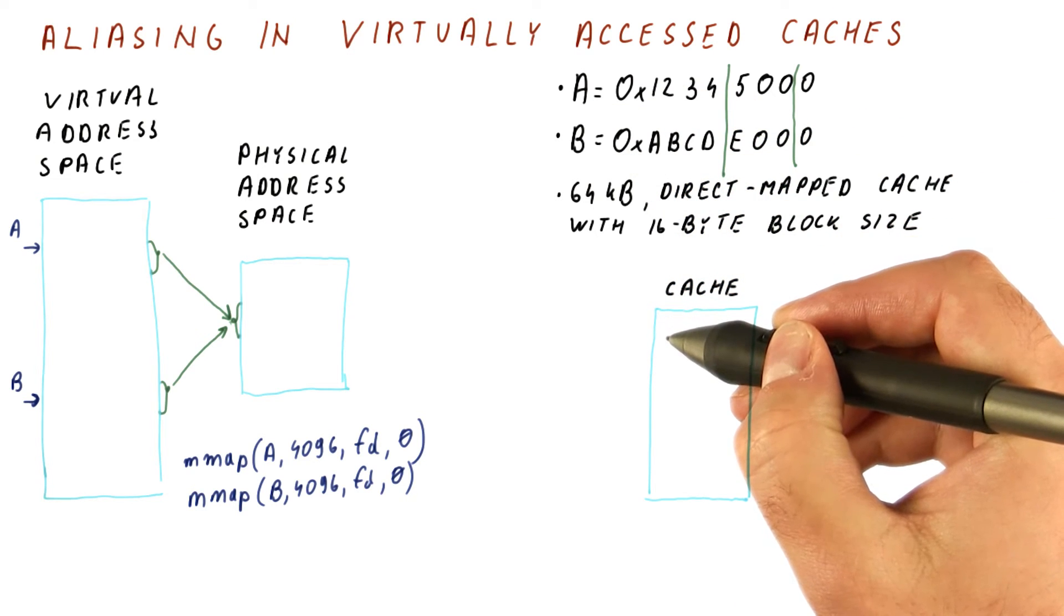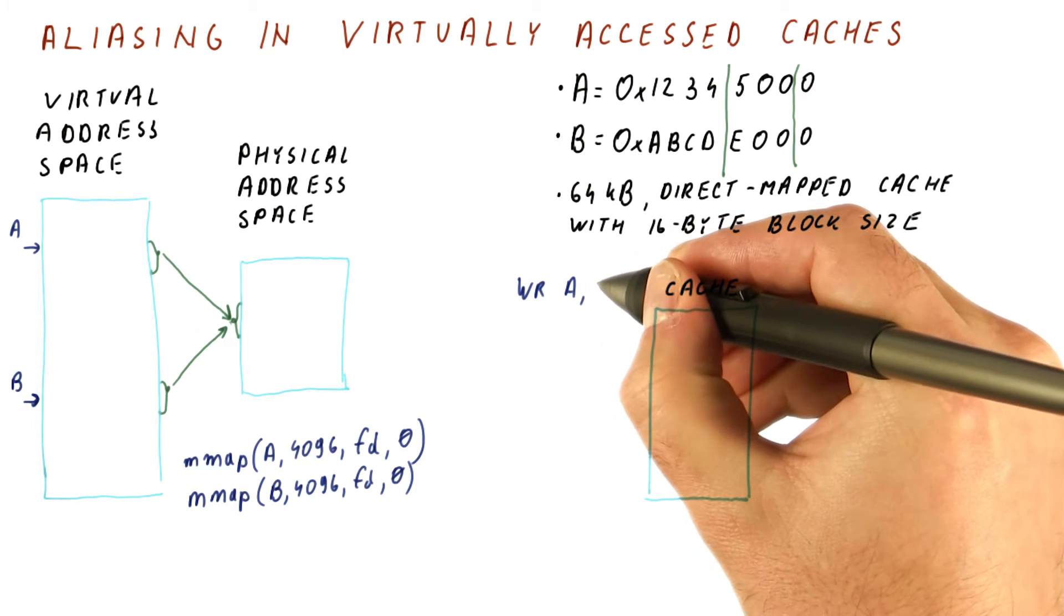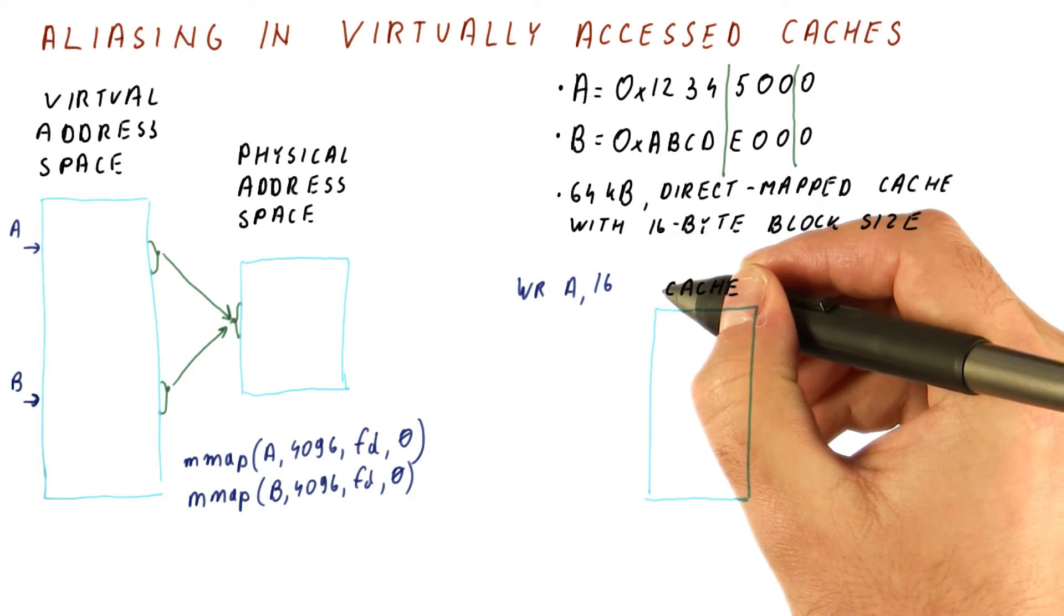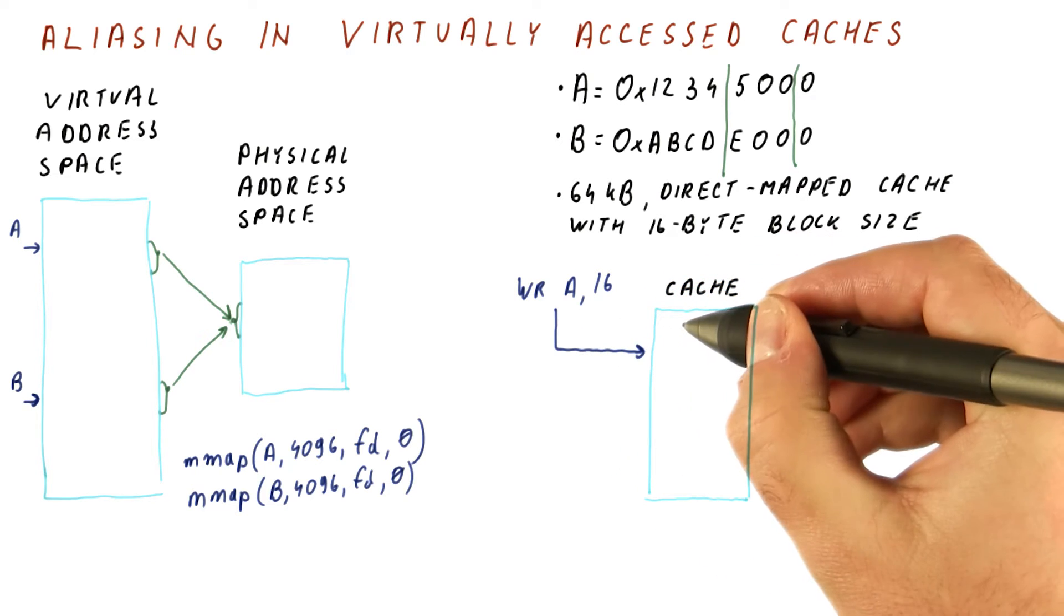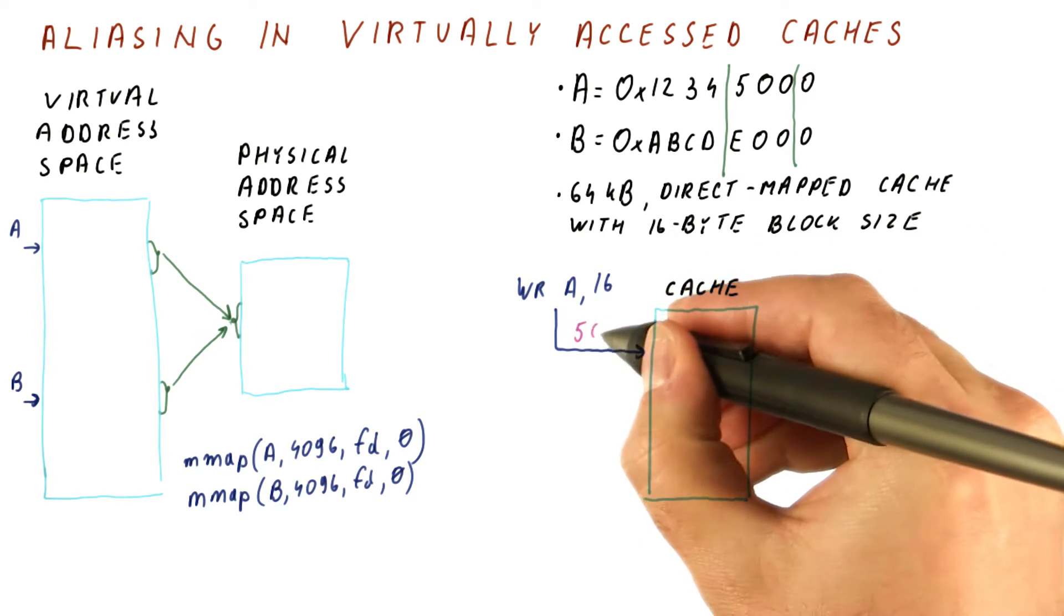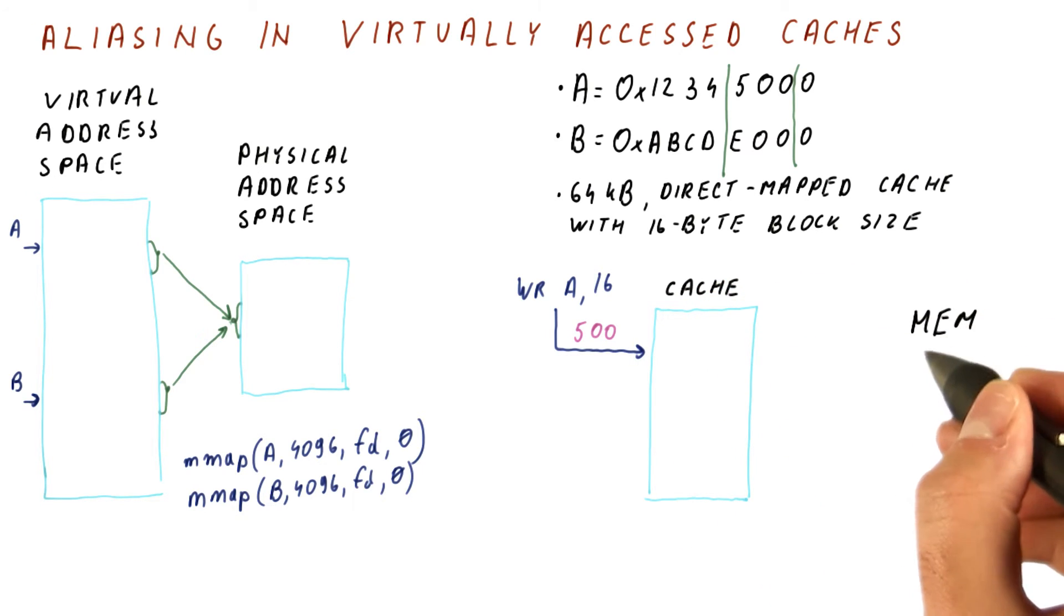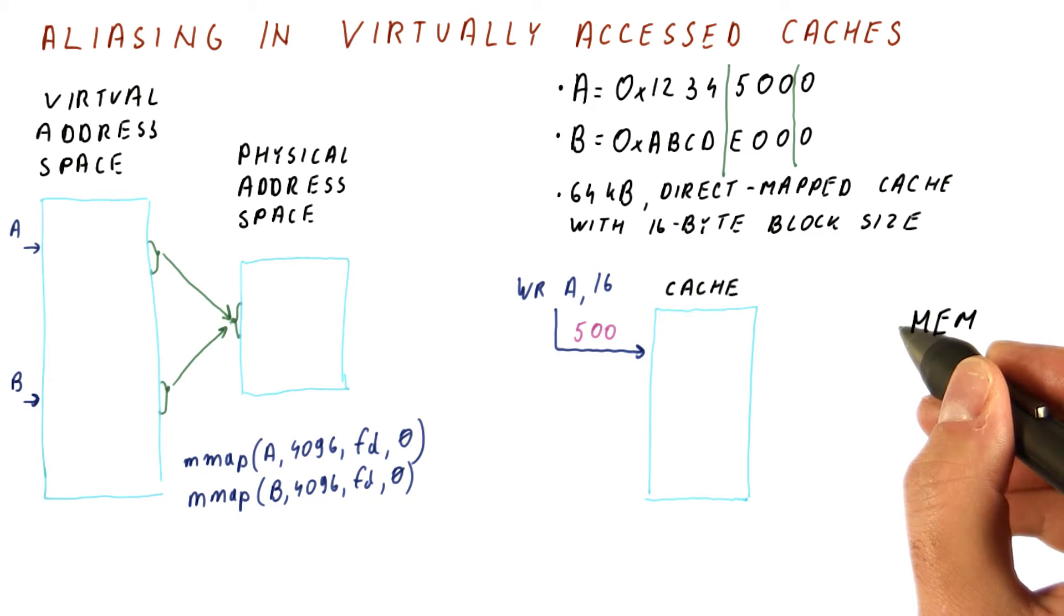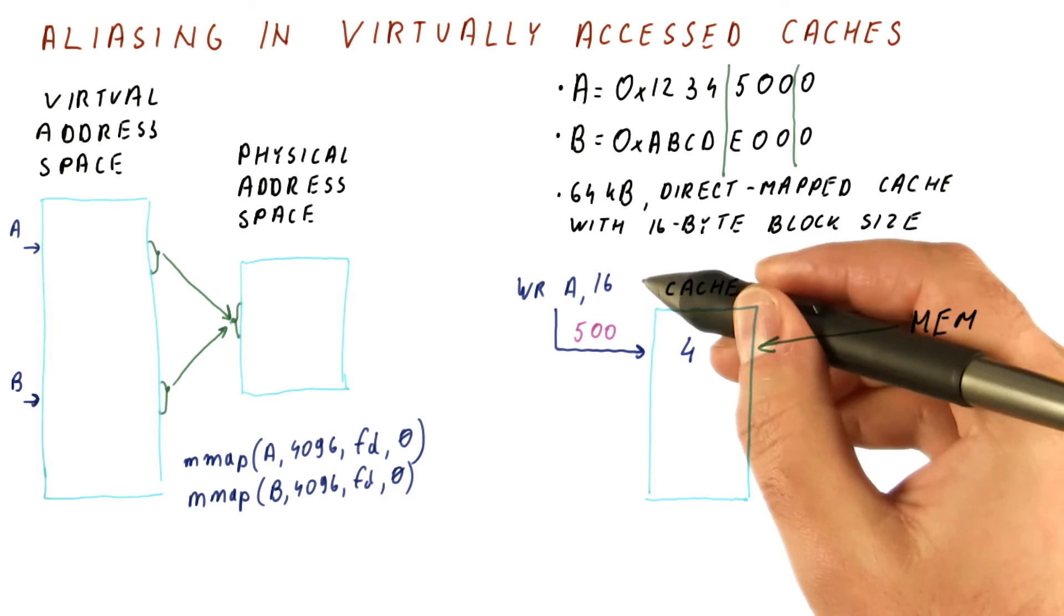So this is how the aliasing problem occurs. Let's say that the processor writes a value of 16 to A. It breaks down the address, indexes into the cache using the index of hex 500. Let's say that this is a cache miss. So we go to memory and from the physical location where this data is mapping to, we fetch a value. And let's say that this value is 4.